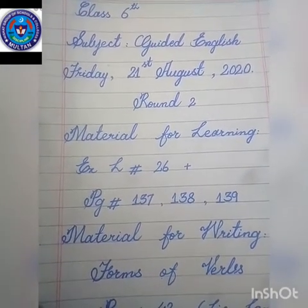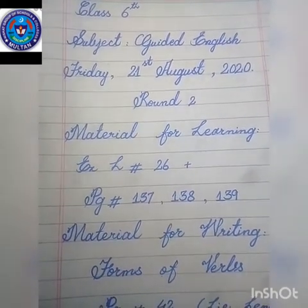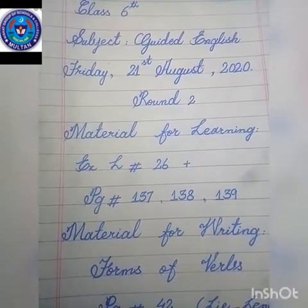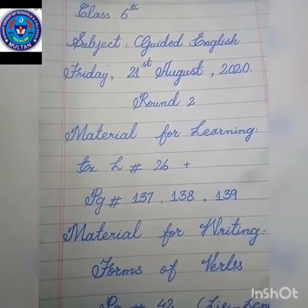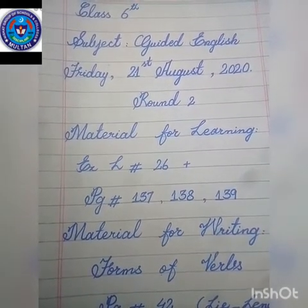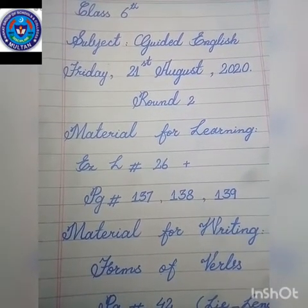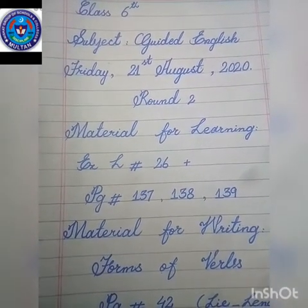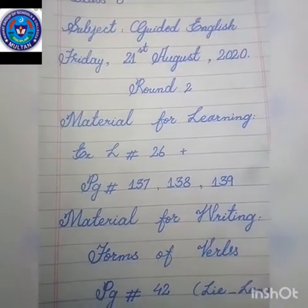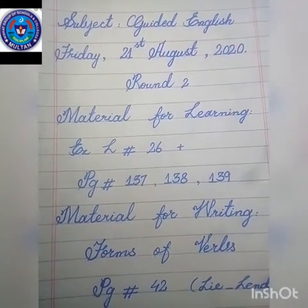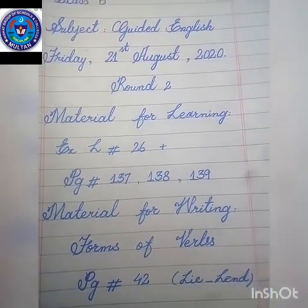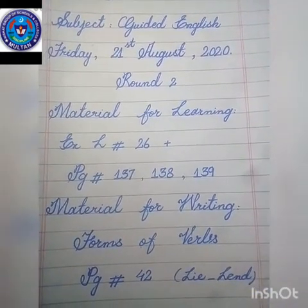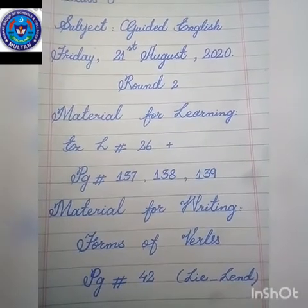The material for learning is the exercise of lesson number 26, pages 137, 138 and 139. The material for writing is forms of verbs, page number 42, from 'lie' to 'lend'.